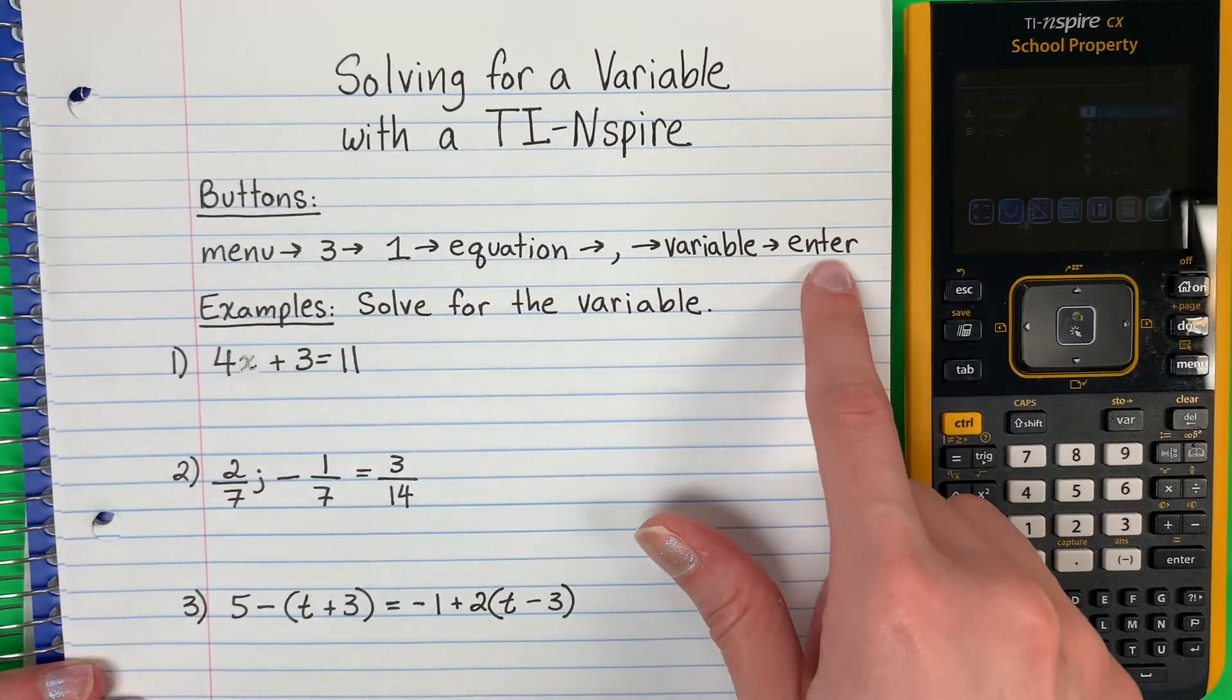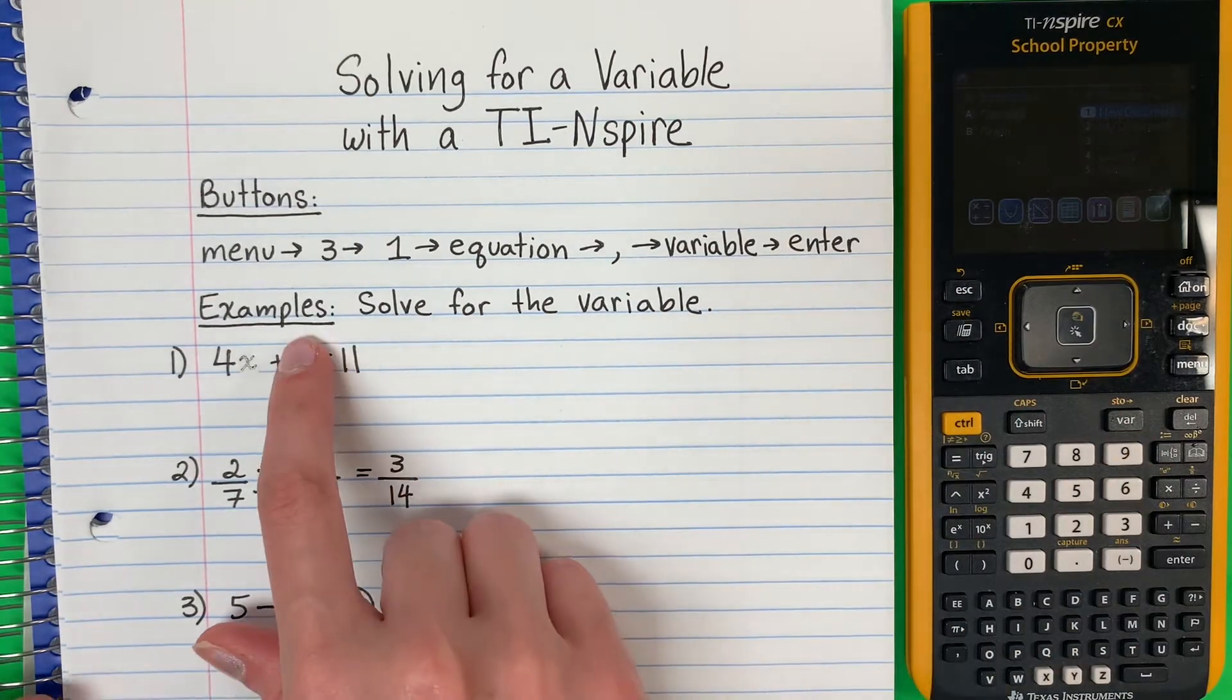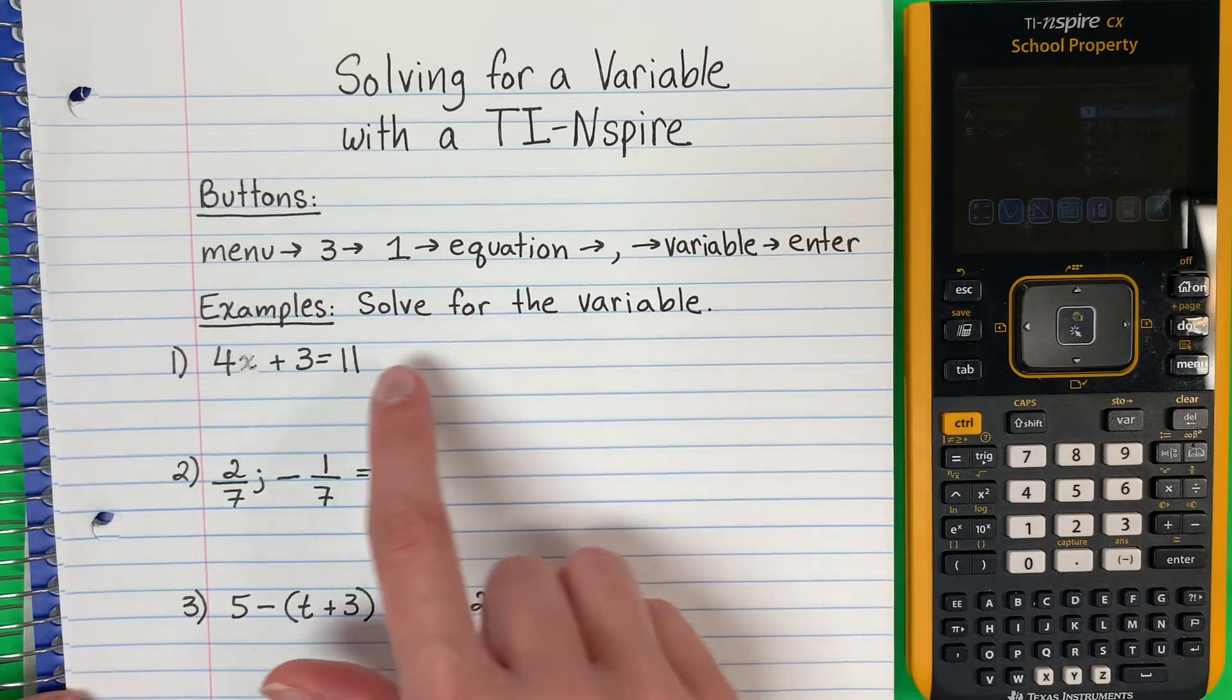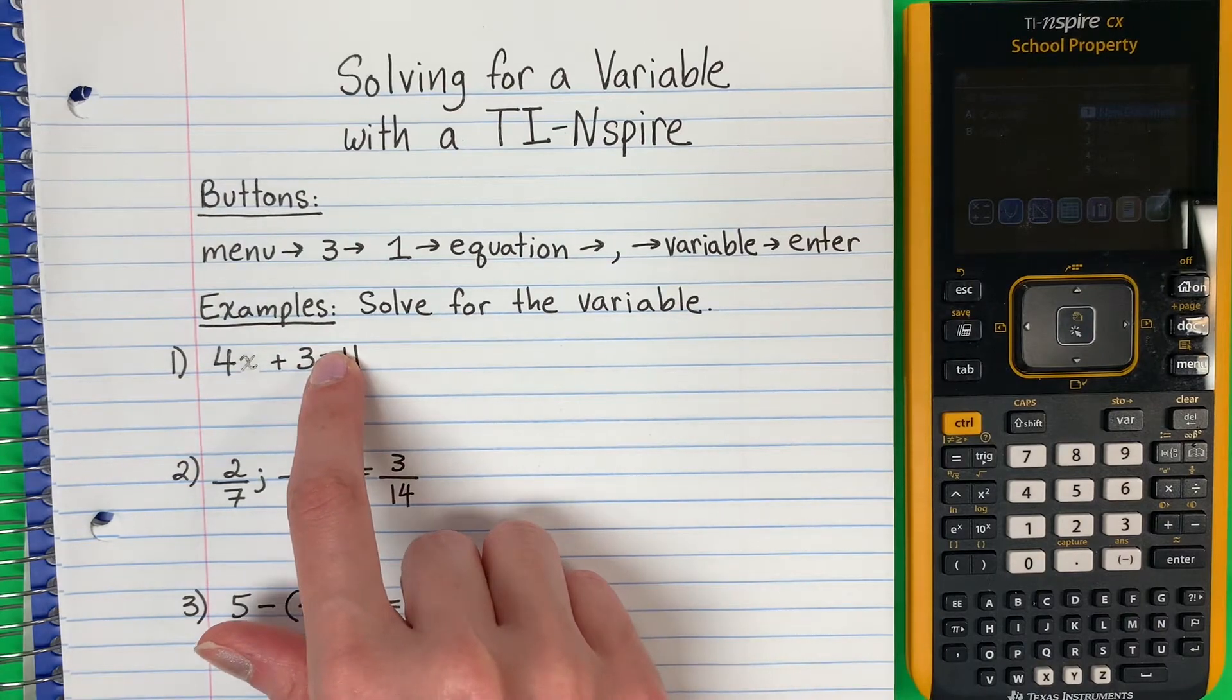Aquí están los botones, si olvidan. Alright, so examples. Solve for the variable. So that means I want to get the letter alone. Quiero la letra sola.